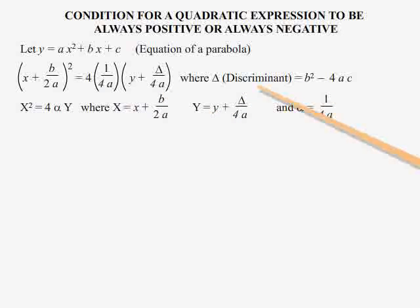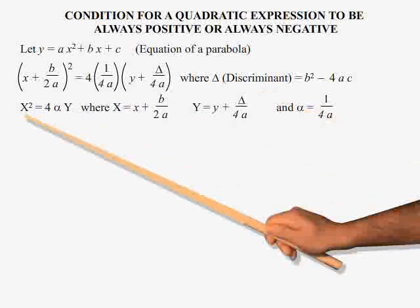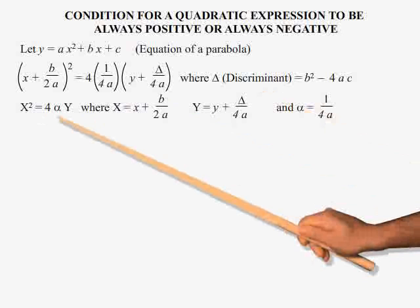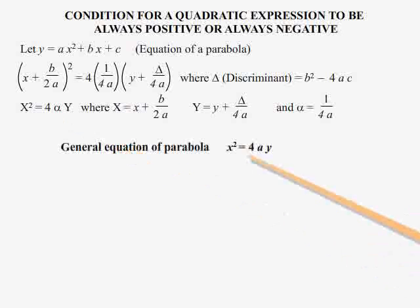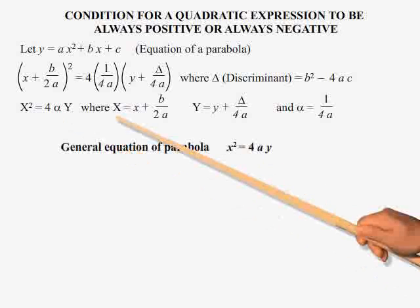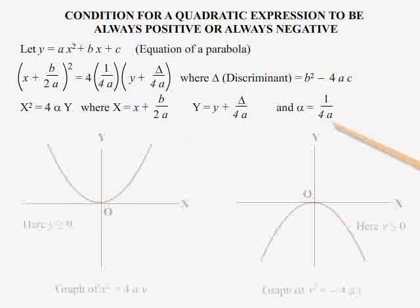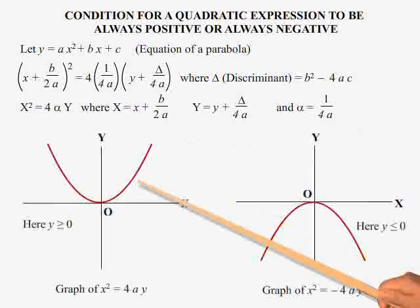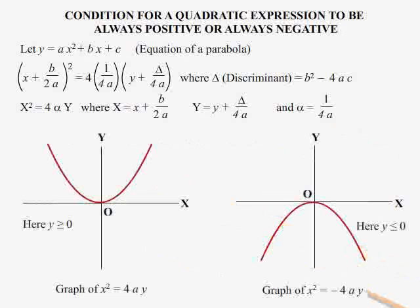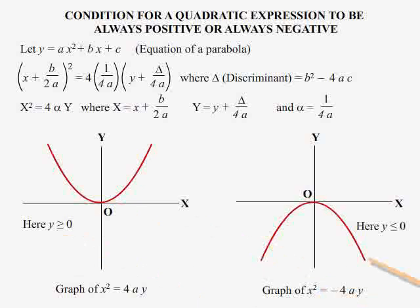Where delta equals b squared minus 4ac, often called the discriminant. The equation may be simplified and written as uppercase X squared equals 4 times alpha times uppercase Y, equivalent to the general equation of a parabola x squared equals 4aY. From coordinate geometry, the graph of x squared equals 4aY has y greater than or equal to 0, and the graph of x squared equals minus 4aY has y less than or equal to 0.